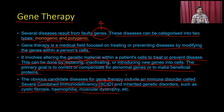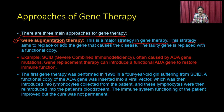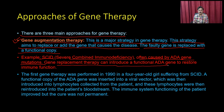There are three main approaches for gene therapy. The first is gene augmentation therapy, a general major strategy aimed at replacing or adding genes that cause disease. The faulty gene is replaced with a functional gene copy. For example, SCID is often caused by ADA gene mutations, and gene replacement therapy can introduce a functional ADA gene to restore immune function.